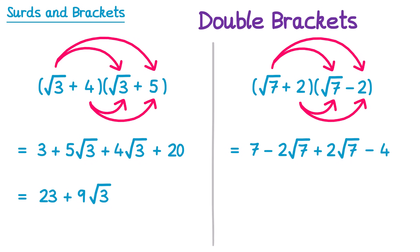In this one we can simplify as well. If we do 7 take away 4 we end up with 3. And when we simplify the root 7 terms, we have negative 2 root 7 plus 2 root 7 — these two terms cancel out since negative 2 plus 2 is 0. So the answer to this one is actually just the number 3.